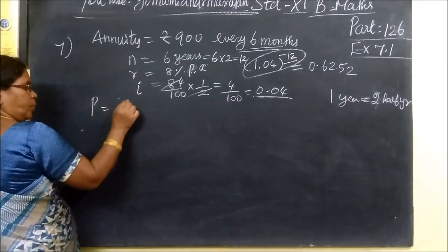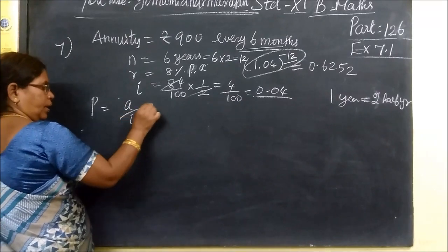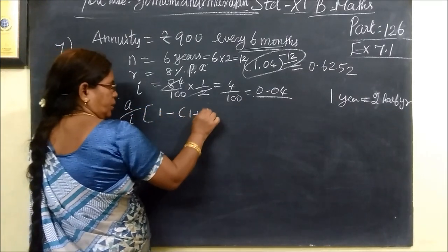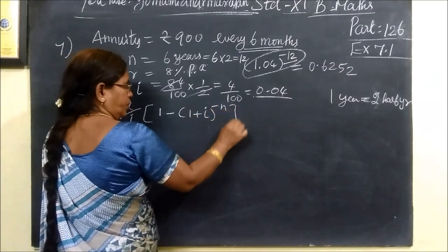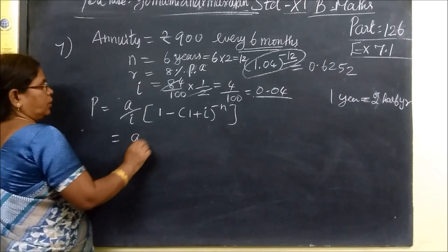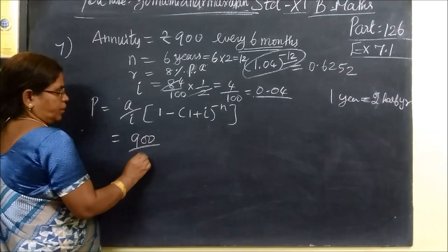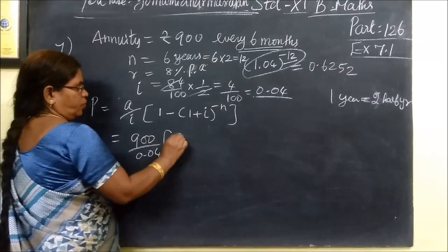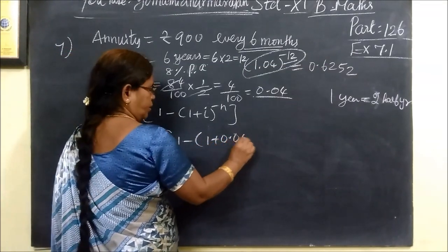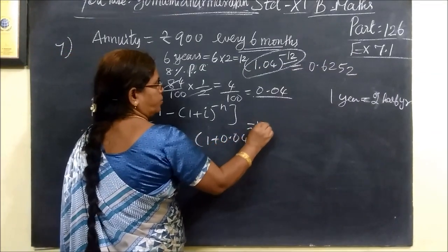Now present value formula A by I, 1 minus 1 plus I to the power minus N. So this is A equals 900 by 0.04, 1 minus 1 plus 0.04 to the power minus 12.